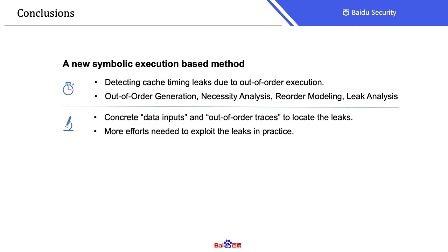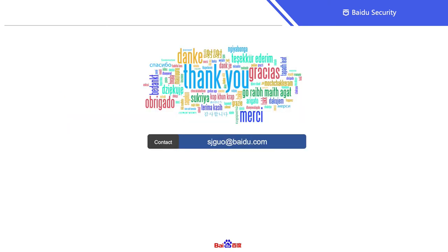Finally, we come to our conclusion. We proposed a new symbolic execution-based method to detect cache timing leaks due to out-of-order execution. We developed four new components for analysis. For future work, we need more efforts to exploit the timing leaks in practice. Thank you for listening. For more details, please refer to our paper or contact me directly.